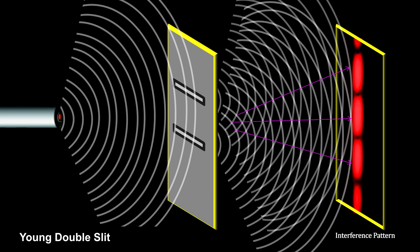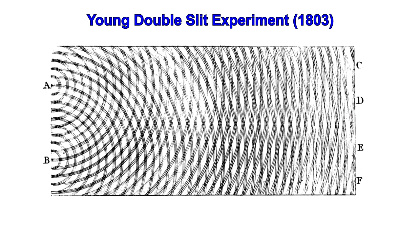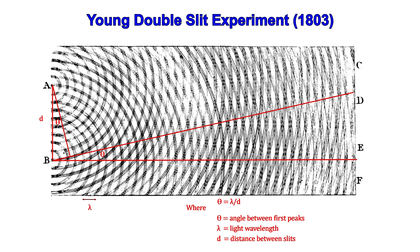When Thomas Young did this double slit experiment, he showed conclusively that light diffracted and therefore was a wave. Here's his sketch of two slit diffraction that he presented to the Royal Society in England in 1803.